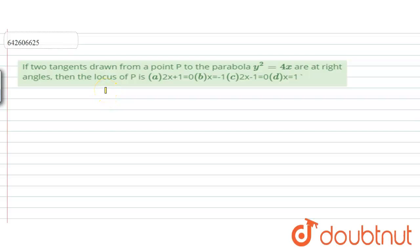Hello everyone, let us explain this question to you now. Question says, if two tangents drawn from a point P to the parabola y square equals 4x are at right angle,